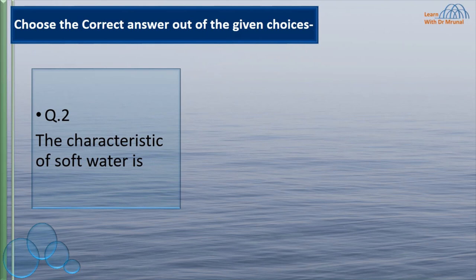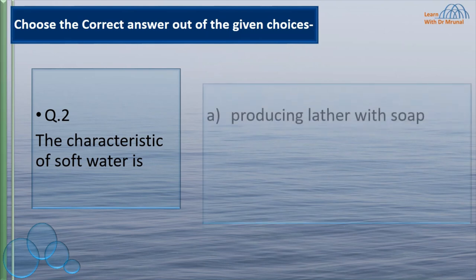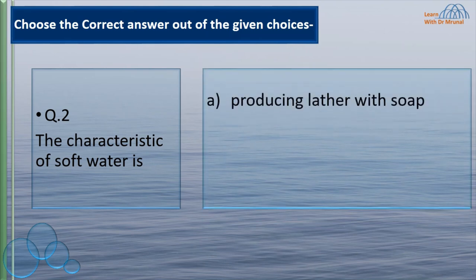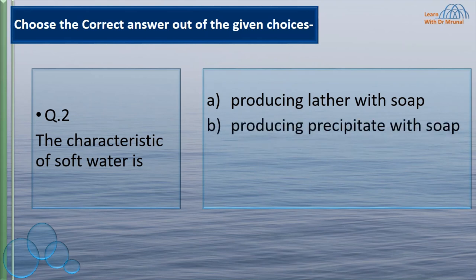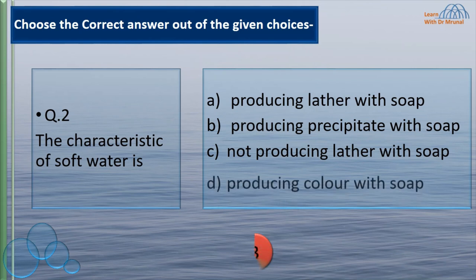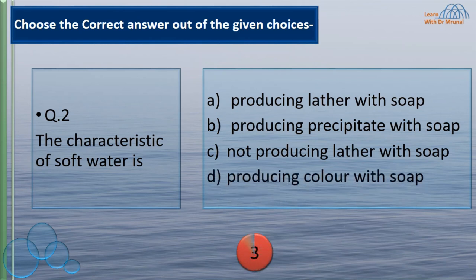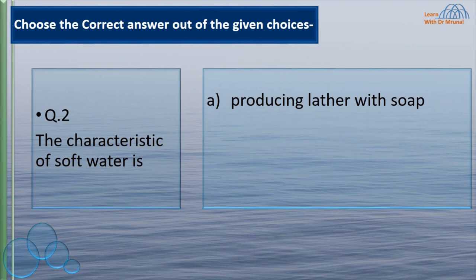The characteristic of soft water is: producing lather with soap, producing precipitate with soap, not producing lather with soap, producing color with soap. Soft water produces lather with soap, so the correct option is A.